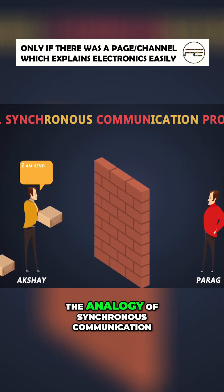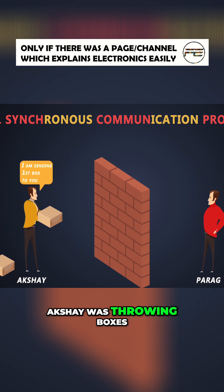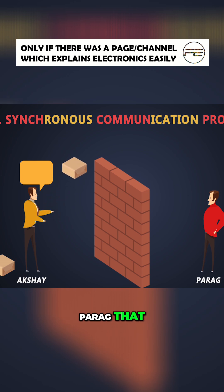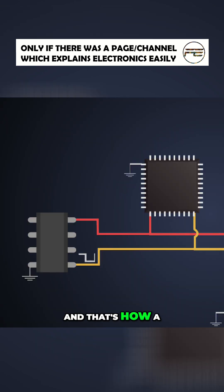If we look at the analogy of synchronous communication, Akshay was throwing boxes towards Parag. While throwing every box, he used to notify Parag to get synchronization between both of them. And that's how a clock signal on the clock line works.